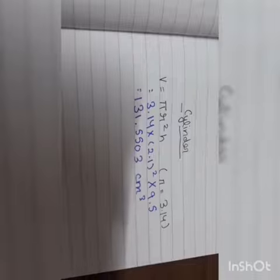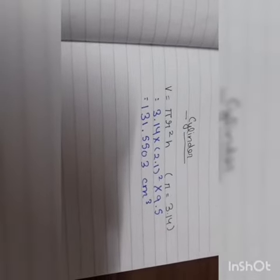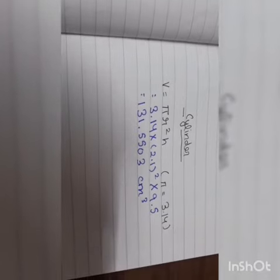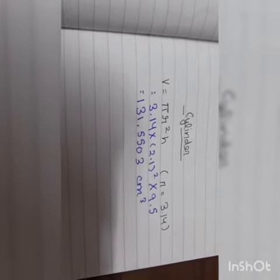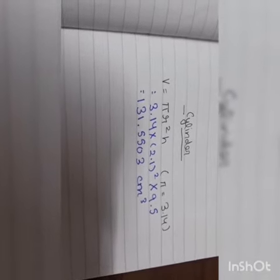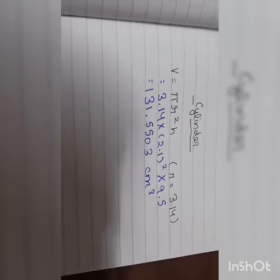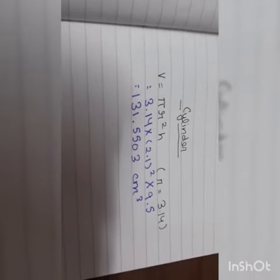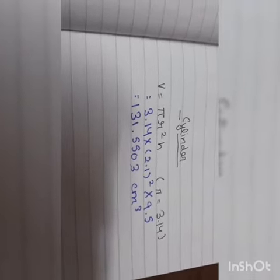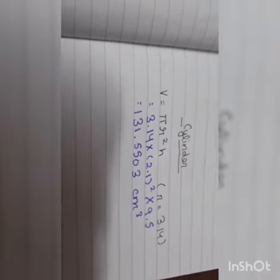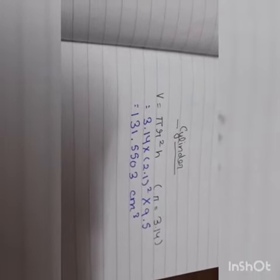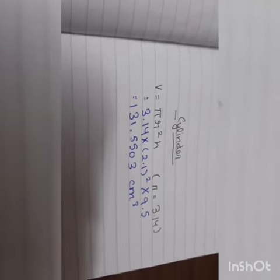Now, we would be finding the volumes of all three shapes. And as the measurement is same, so the radius and height would be same. First, we will be finding the volume of cylinder. And formula for the same is pi r square h and pi is given 3.14. So, substituting the values, we will get 131.5503 cm³.